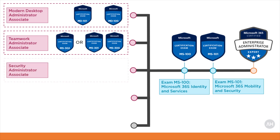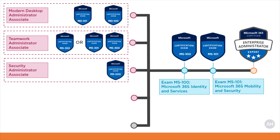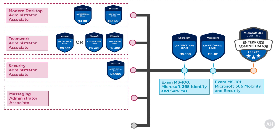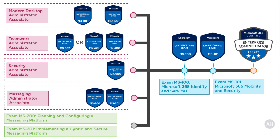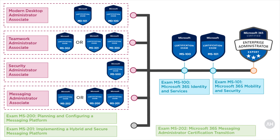If your role is to secure Microsoft 365 enterprise and hybrid environments, implement and manage security and compliance solutions, respond to threats and enforce data governance, then you can start by getting your Security Administrator Associate badge, which you can get by passing only one exam: MS-500 Microsoft 365 Security Administration. If your role is to deploy, configure, manage and monitor messaging infrastructure, permissions, client access, mail protection and mail flow in both on-premises hybrid and cloud enterprise environments, then you should start by getting the Messaging Administrator Associate badge, which you can get in two ways: either pass both MS-200 (Planning and Configuring a Messaging Platform) and MS-201 (Implementing a Hybrid and Secure Messaging Platform), or pass the MS-202 transition exam.